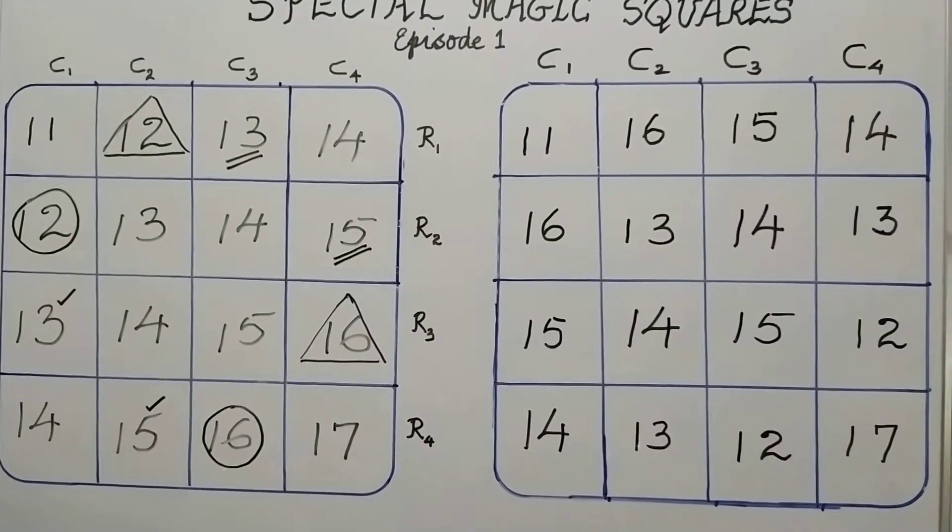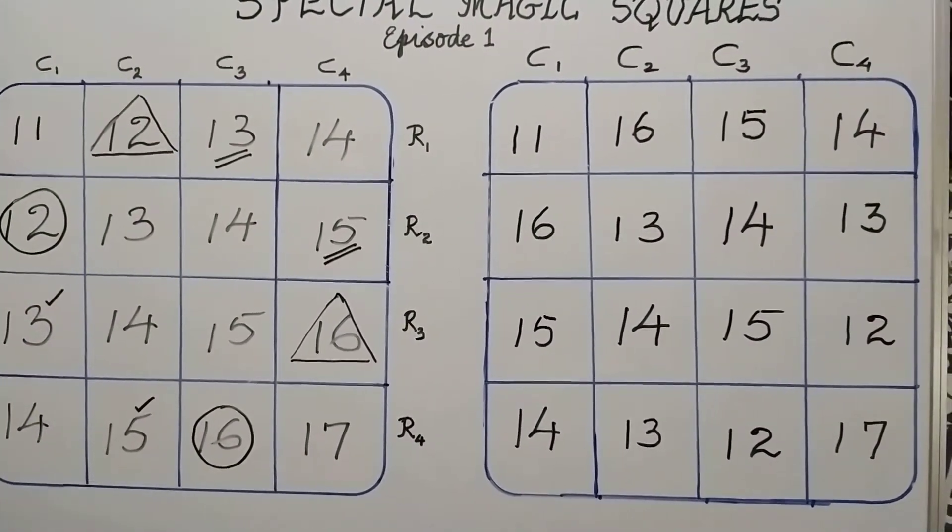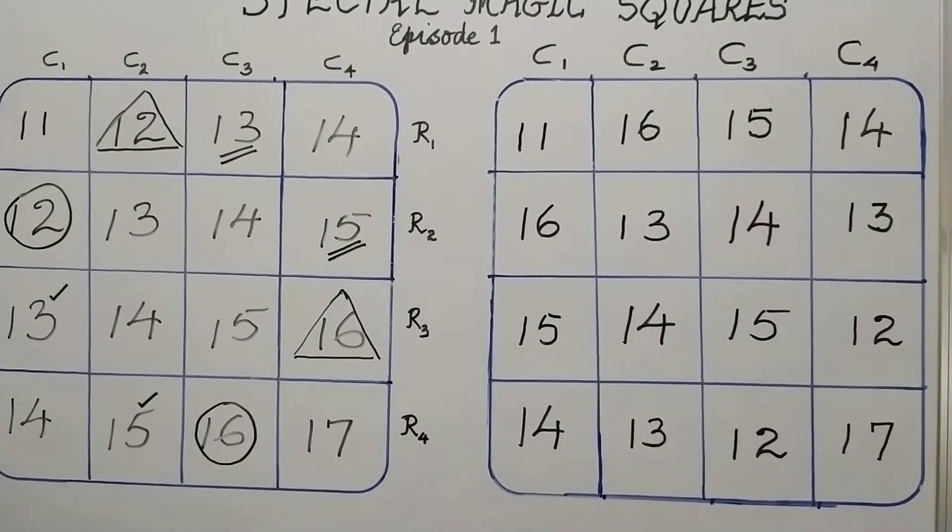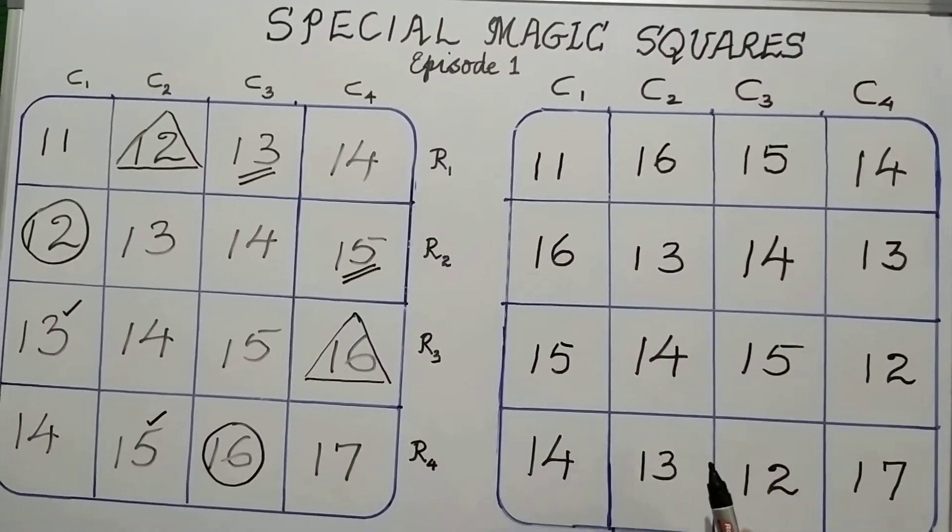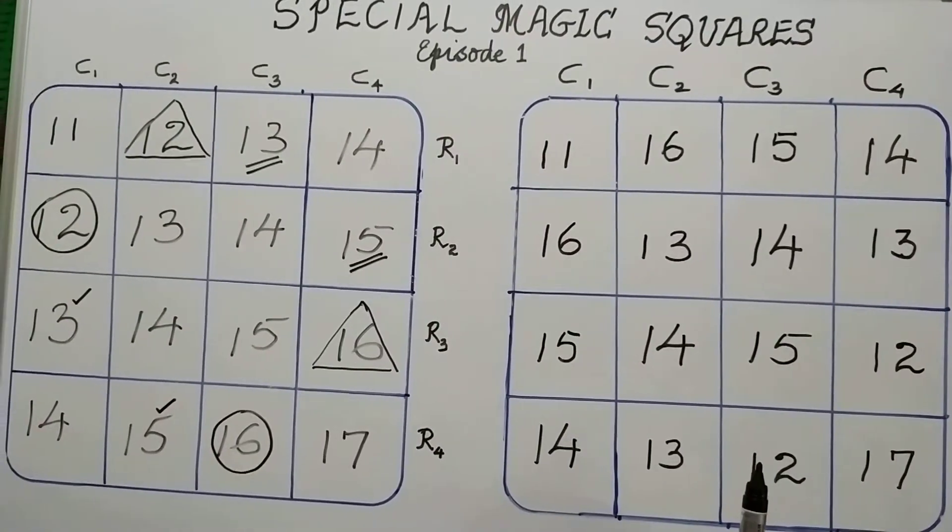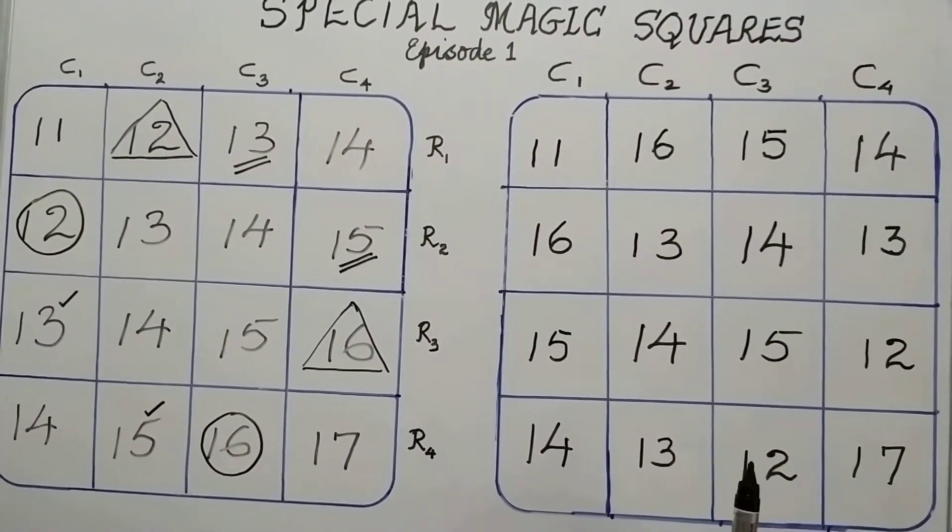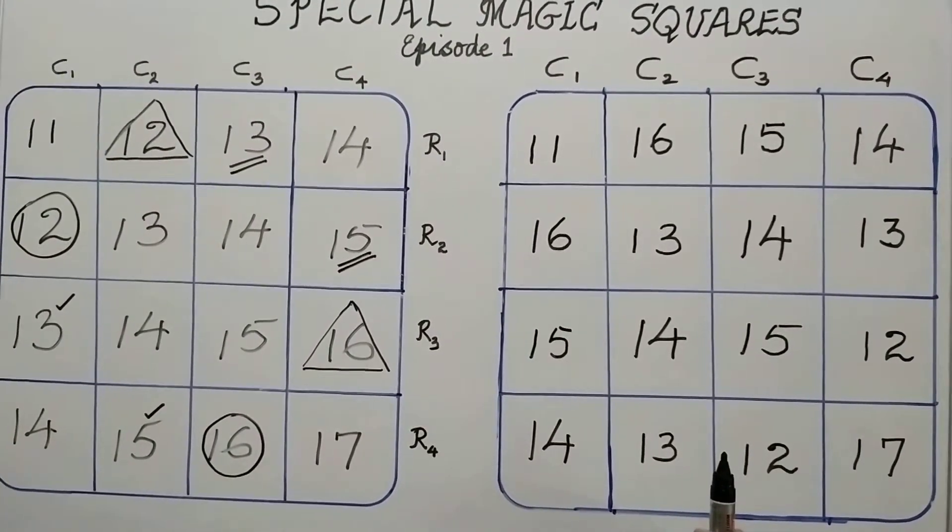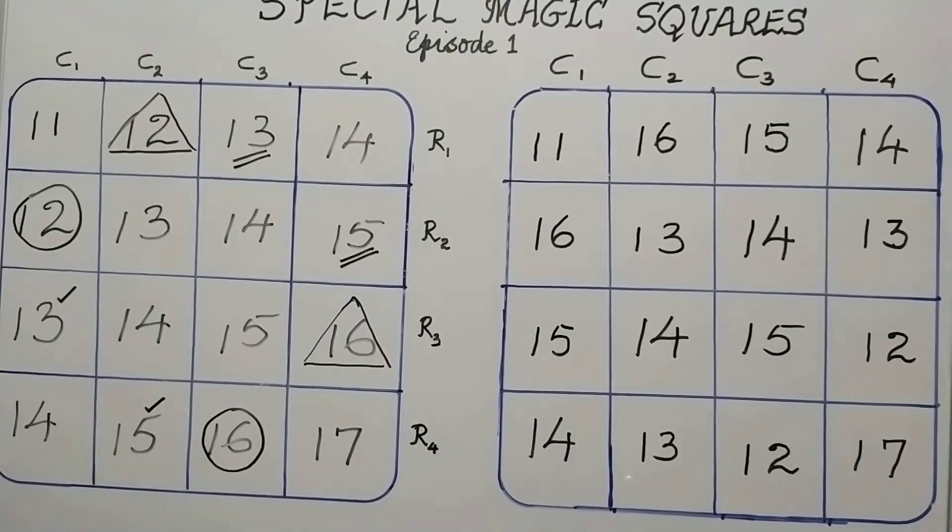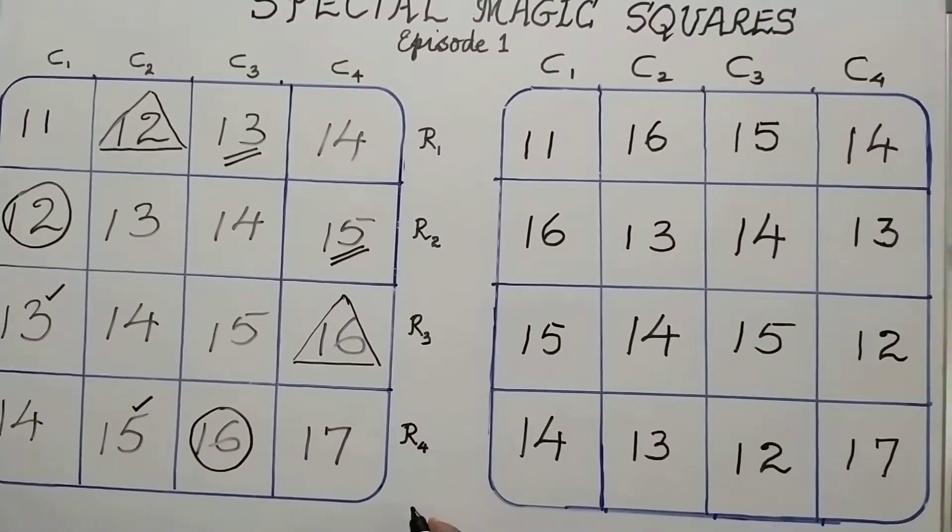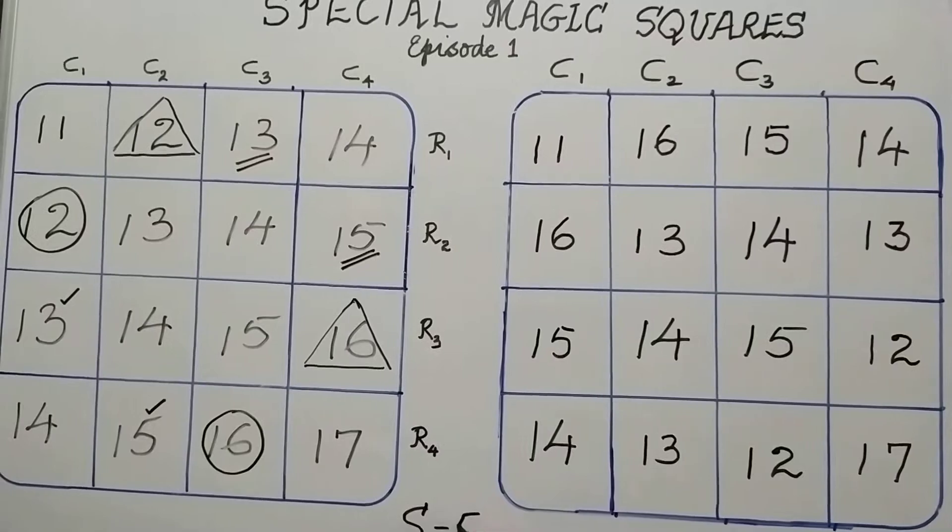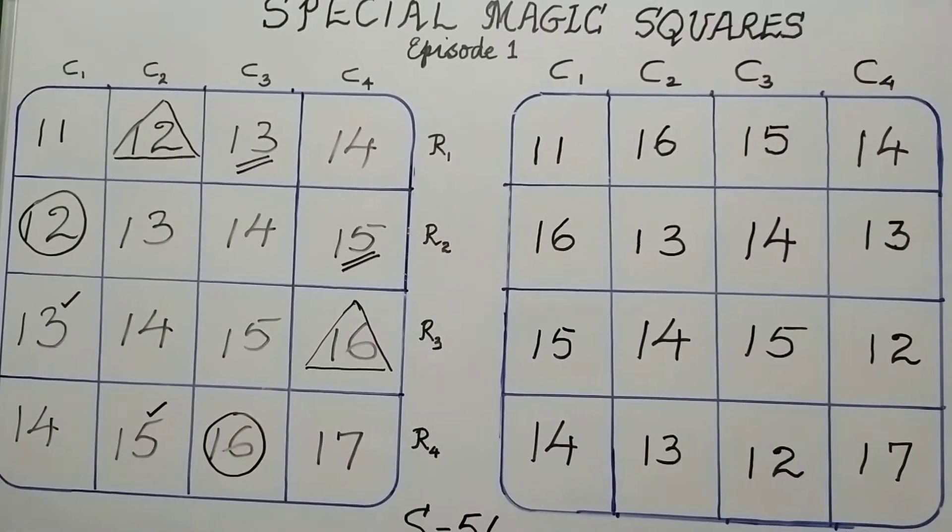Here we have the magic square, the special magic square, which is a 4 by 4 magic square, constructed by using 7 consecutive natural numbers and whose sum or magic sum is equal to 56.